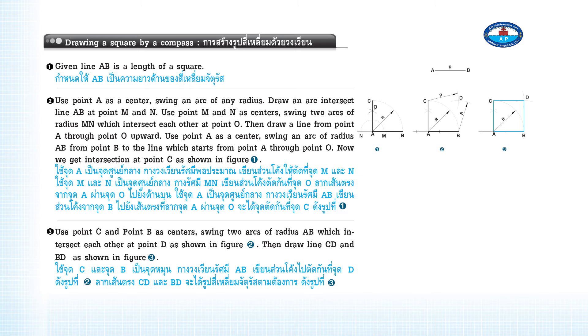Use point C and point B as centers. Swing two arcs of radius AB which intersect each other at point D as shown in Figure 2. Then draw lines CD and BD as shown in Figure 3.